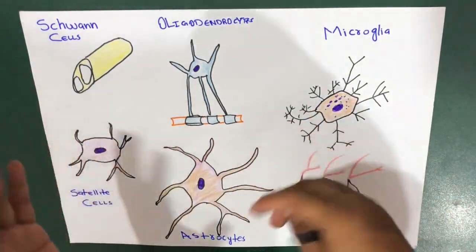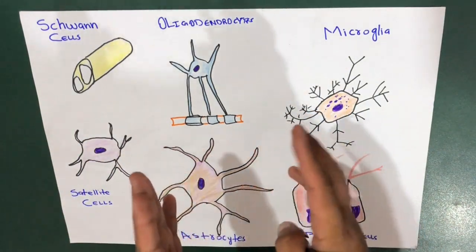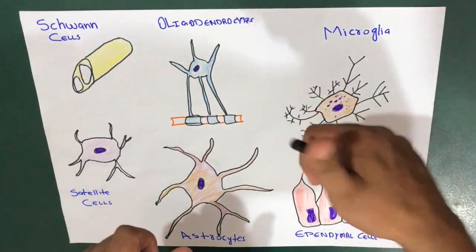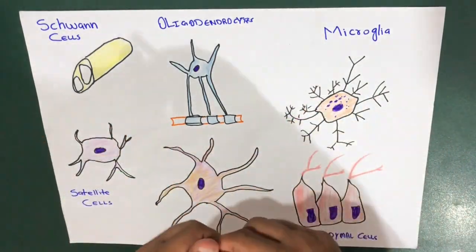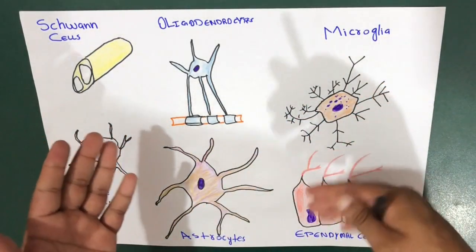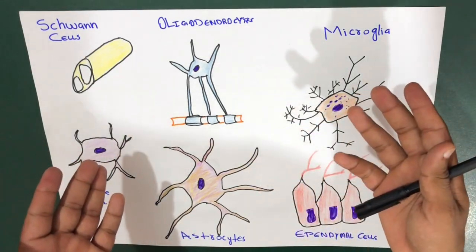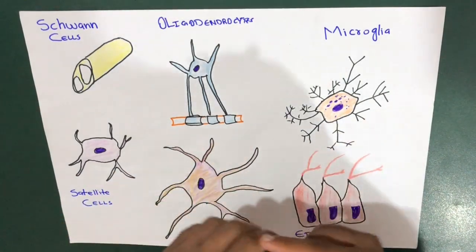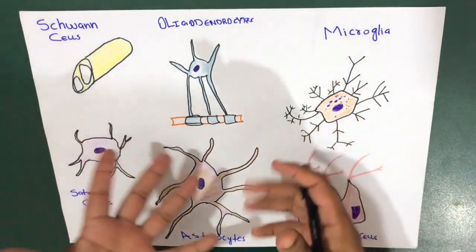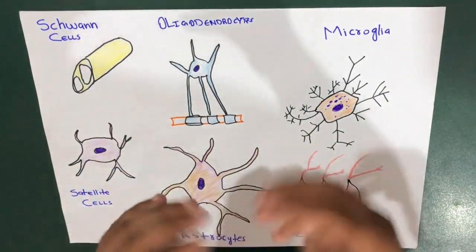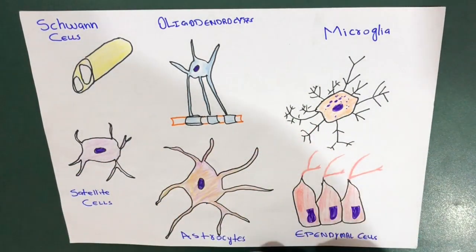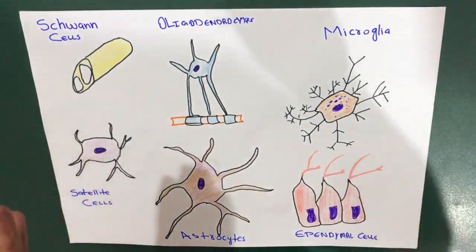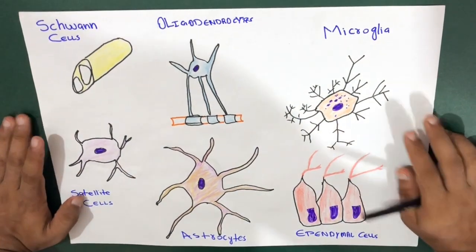There are two groups of cells that comprise the human nervous system: neurons, which we have already uploaded a video about, and neuroglial cells, which we are discussing now. Neurons transmit electric signals; neuroglial cells do not. There are a number of different neuroglial cells within the central and peripheral nervous system, and these different types play distinct fundamental roles in supporting the activity of neurons.